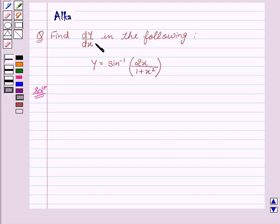I am going to help you find dy by dx in the following: y equals sin inverse 2x upon 1 plus x squared. So, let's start with the solution.